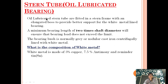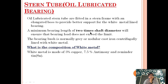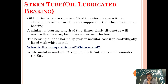In this video, first let's see what are the elements used for construction of an Oil Lubricated Stern Tube. Oil Lubricated Stern Tubes are fitted in a stern frame with an elongated boss to provide better support for a white metal lined bearing. The Oil Lubricated Bearing is provided with a white metal lined bearing, and the bearing length is 2 times the shaft diameter. For example, if the shaft diameter is 100 mm then the bearing length will be 200 mm.